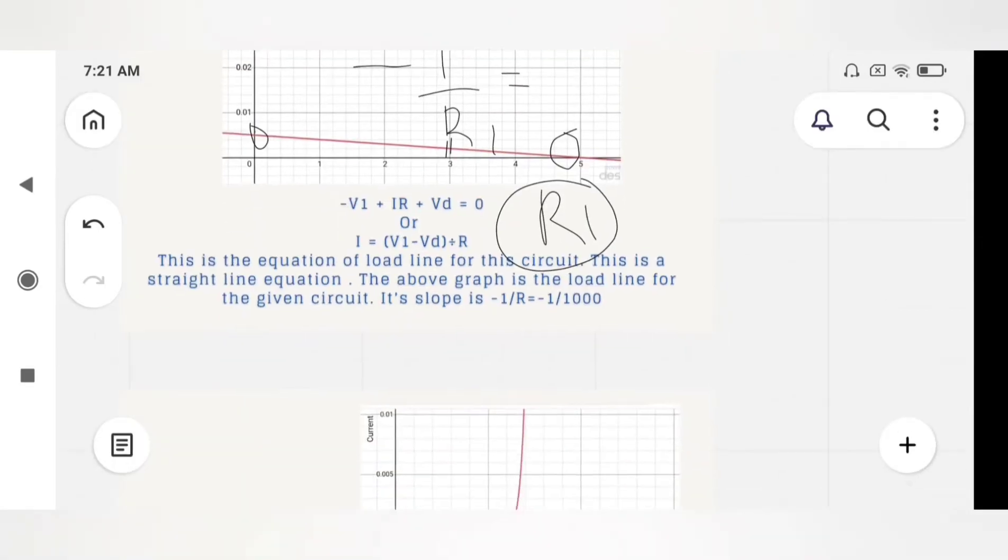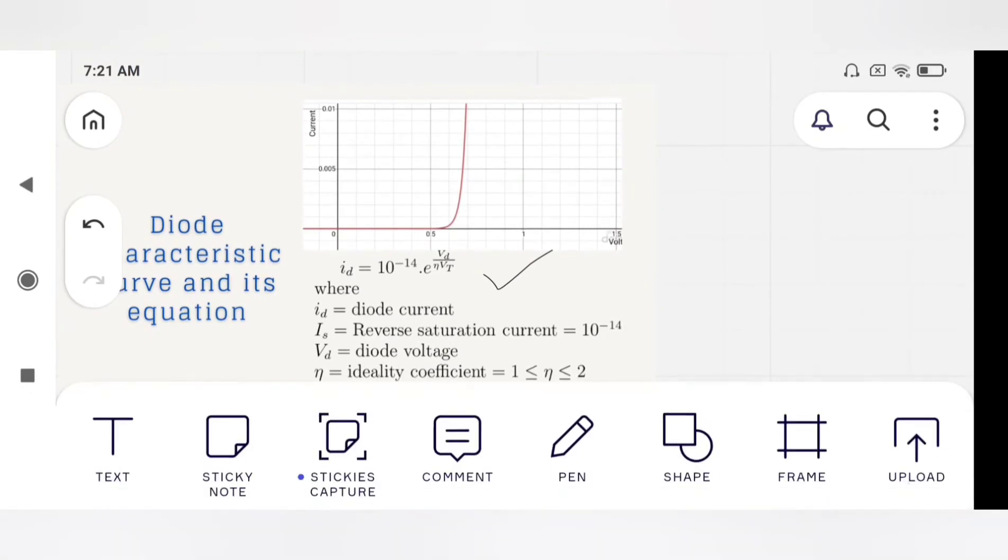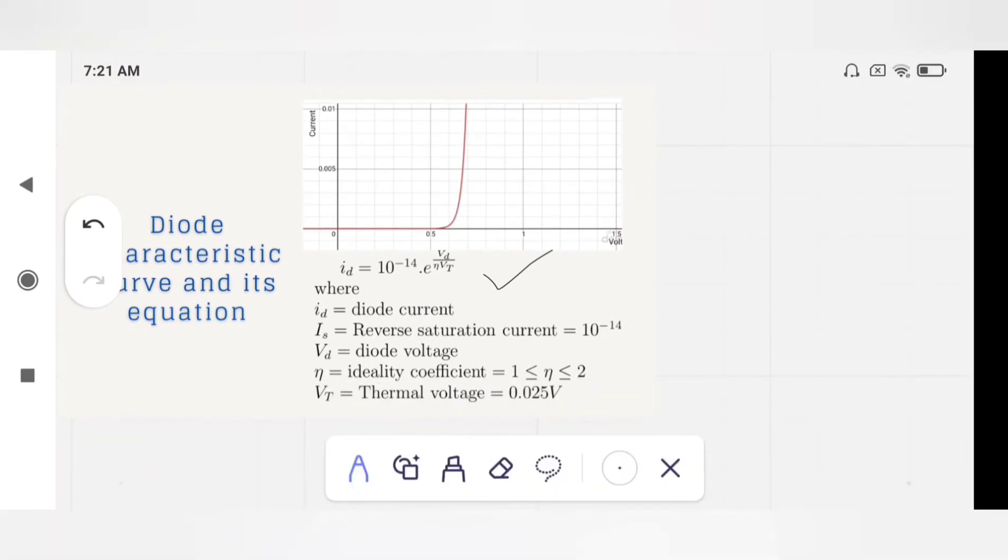But the diode characteristic curve is the response of the diode, how it works. As you know, the diode drop is 0.7 volt. After 0.7 volt, the diode drop will remain the same as you increase the voltage. But the diode drop remains the same and current increases rapidly. As the current is going up exponentially, this is the exponential factor, where Is is reverse saturation current, VD is diode voltage.